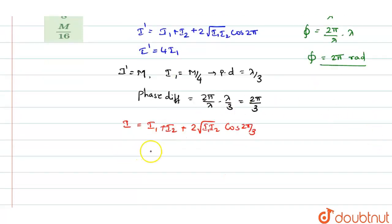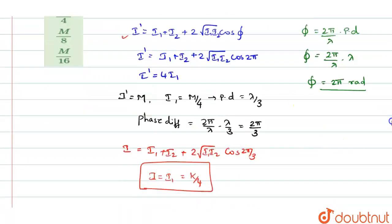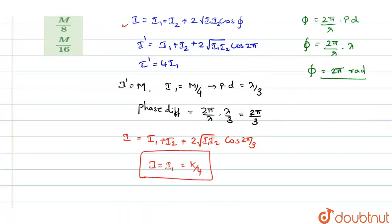And so you get I will be equal to, I₁ will be equal to k by 4. So the value of the intensity at path difference lambda by 3 is, sorry, it is m by 3, correct? So you can change this. They have given it as m, so you will write it as m by 3.